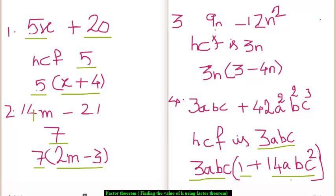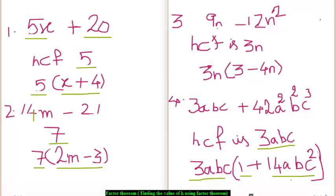The third example is slightly different. It has a variable term, that is n, in both the terms — like you have 9n minus 12n square. Here, when we find the HCF, we get HCF as 3n. That is, the HCF of 9n and 12n square is 3n.